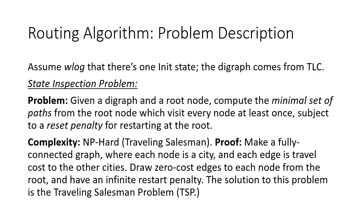Now I'll discuss the routing algorithm. We have this TLC state graph, and we need to explore it and hit each state at least once. The state inspection problem is: given a digraph and a root node, compute the minimal set of paths from the root node that visits every node at least once, subject to a reset penalty for starting at the root. The complexity of this is NP-hard because it reduces to the traveling salesman problem. You can take a fully connected graph where each node is a city in TSP and each edge is a travel cost, draw zero-cost edges to each node from the root and have an infinite restart penalty - that solves TSP.